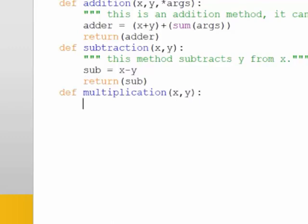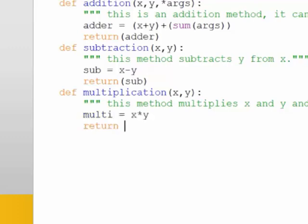The third method is multiplication which multiplies x by y and you can write help text as well here and follow this text by the method itself. You declare a variable which is multi and it is equal to the multiplication of x and y and return multi so that the user gets the value.